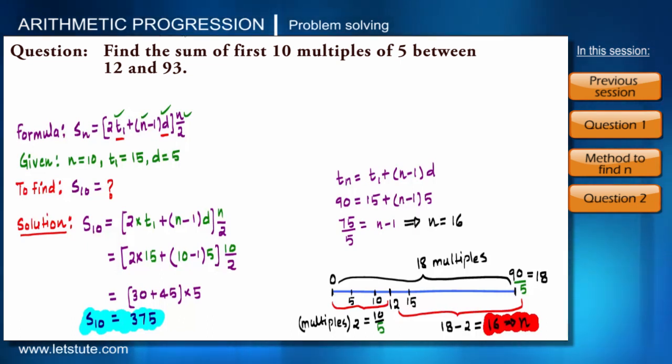So friends, from 12 to 93 there are total 16 multiples, and previously we have added only 10 multiples. Why? Because the question asked to add only 10 multiples of 5 between the given range. Now I guess it is very much clear between the questions.